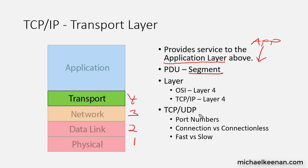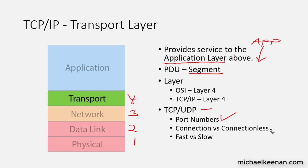The two big protocols at the transport layer are TCP and UDP. Those are the biggest ones that you're going to need to be familiar with — really the only ones for the CCNA exam and most other networking exams. TCP and UDP, as opposed to the network layer or the data link layer which use addresses, put on what are called port numbers. We're going to go over port numbers, connection versus connectionless orientation, and fast versus slow.